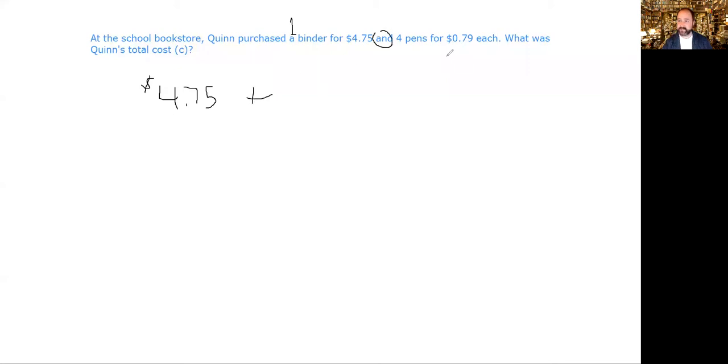And means plus four pens for 79 cents each, so we're going to do parentheses here and say four pens and each one of those is $0.79, cents each.